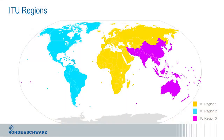Nonetheless, three regions are defined by the ITU. Region 1 is Europe, Russia and Africa, indicated here in yellow. Region 2 is the Americas, and Region 3 is Asia including Australia.